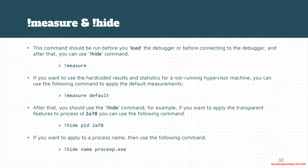So each time that specified process wants to perform some anti-debugging methods, HyperDBG will detect it and try to prevent it from performing those anti-debugging methods, or prevent it from understanding that there is a debugger behind the scene. This is how you can use the !measure and !hide commands.